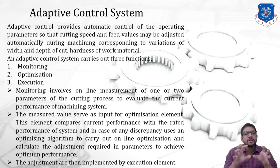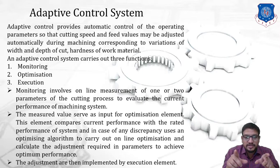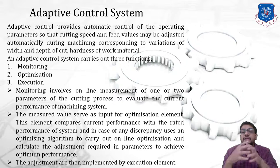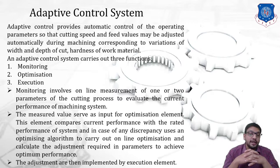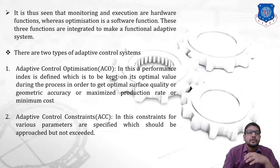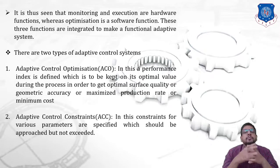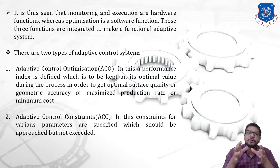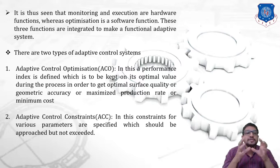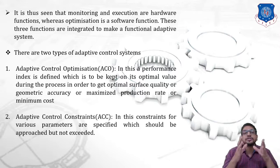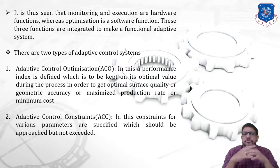The adjustments done by the optimizing element are then implemented by the execution element. Monitoring and execution are hardware functions, whereas optimization is a software function. These three functions are integrated to make a functional adaptive system.